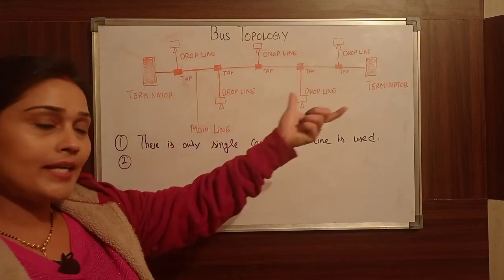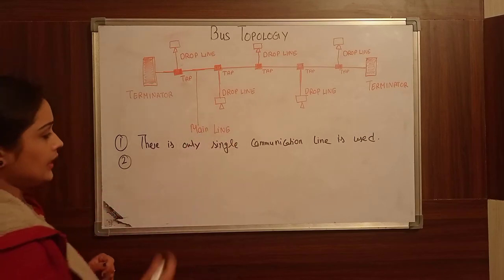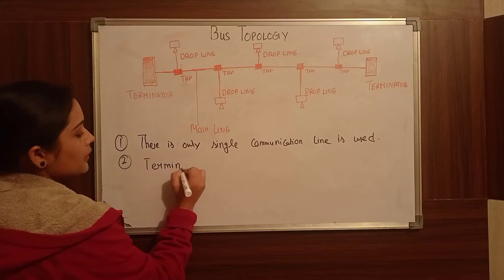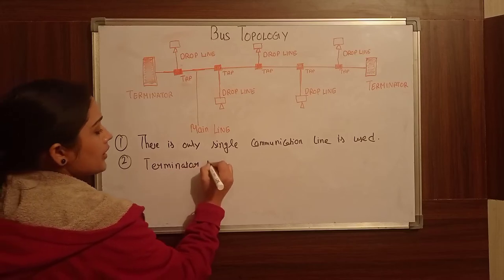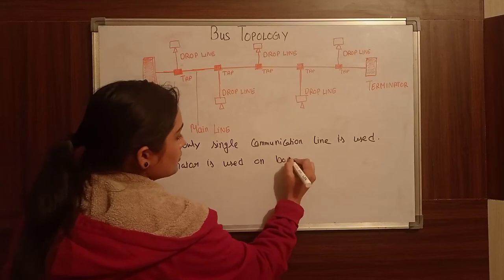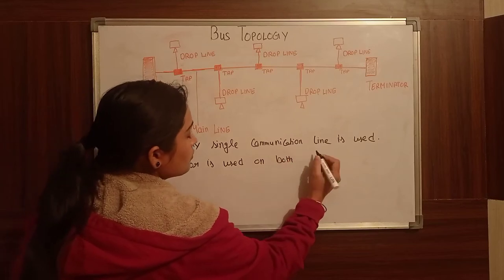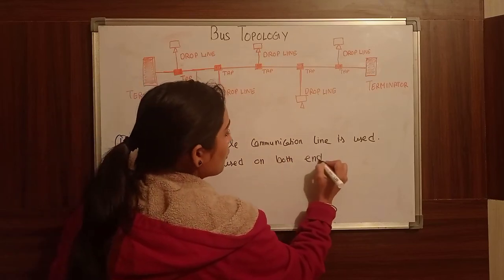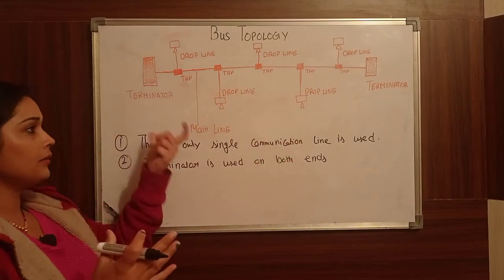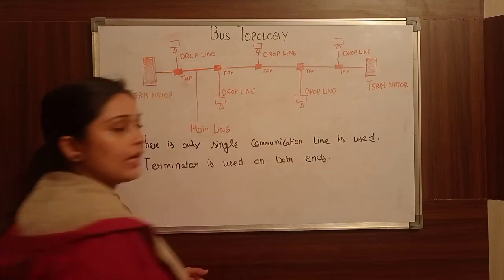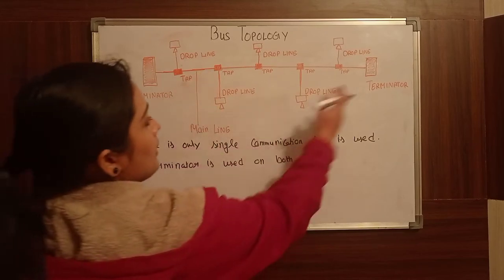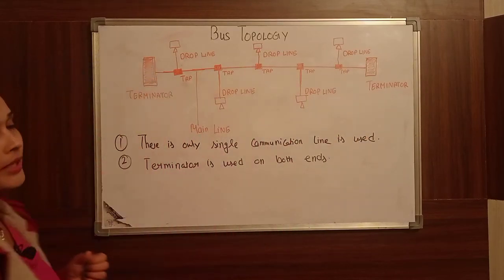A single communication line is used on both sides. Both ends have a terminator. So this single line is called the main line and the terminators are placed at both ends.